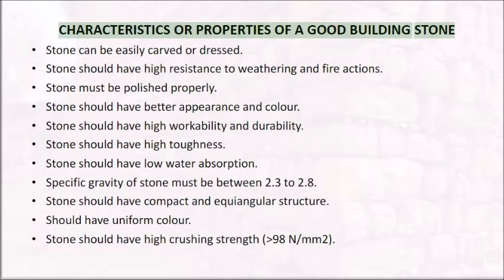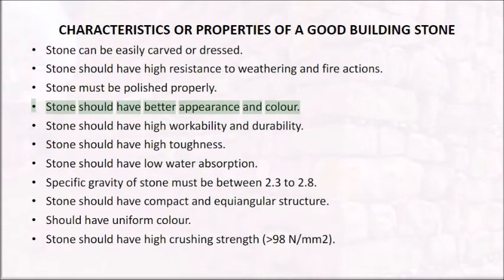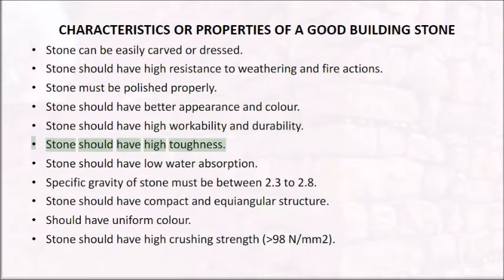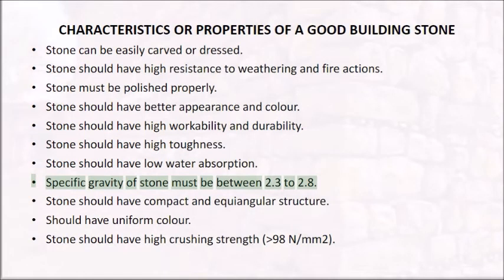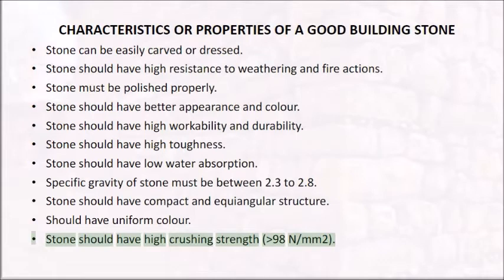Characteristics or properties of a good building stone: stone can be easily carved or dressed; should have high resistance to weathering and fire actions; must be polished properly; should have better appearance and color; should have high workability and durability; should have high toughness; should have low water absorption. The specific gravity of stone must be between 2.3 to 2.8. Stone should have compact and equiangular structure, uniform color, and high crushing strength greater than 98 N/mm2.